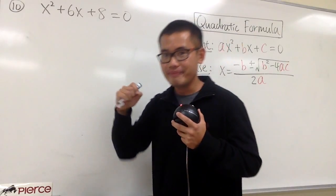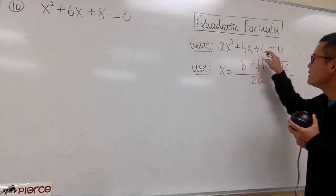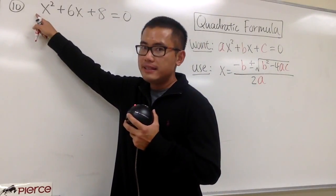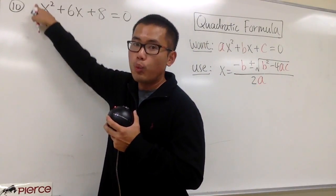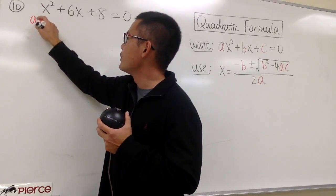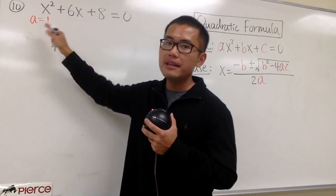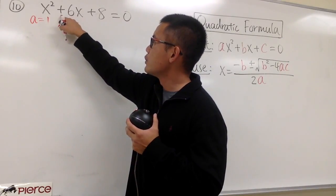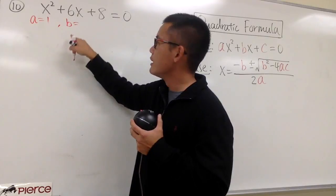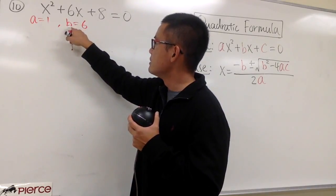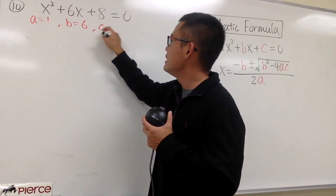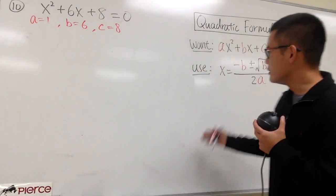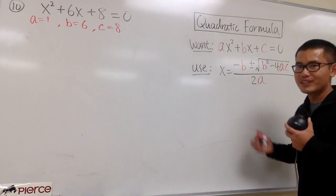We have to identify the abc values. The a is the coefficient of x squared — in our case, a will be 1. Then b is the coefficient of x, which is positive 6. b is 6. And c is the constant term, which is 8. Now we can just plug the abc values into this formula and work it out.